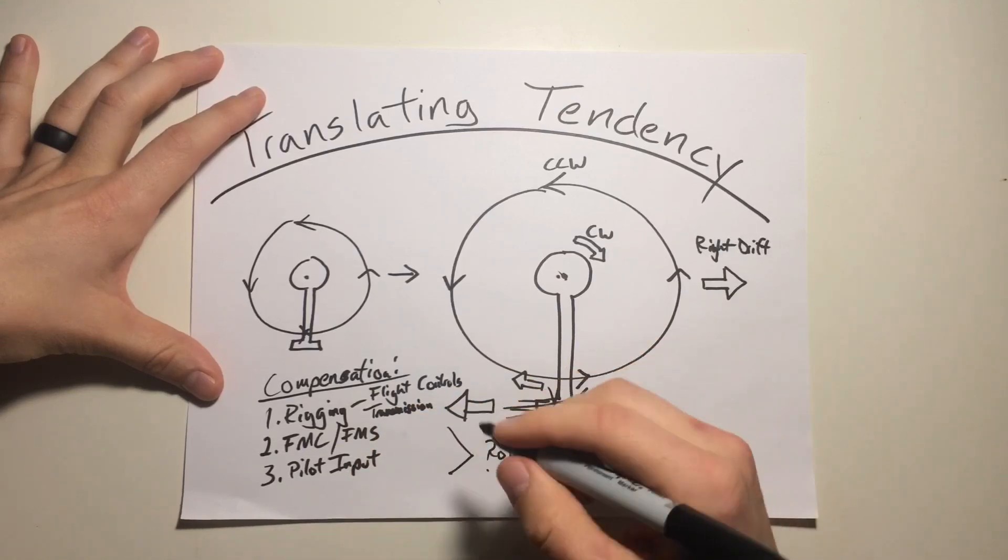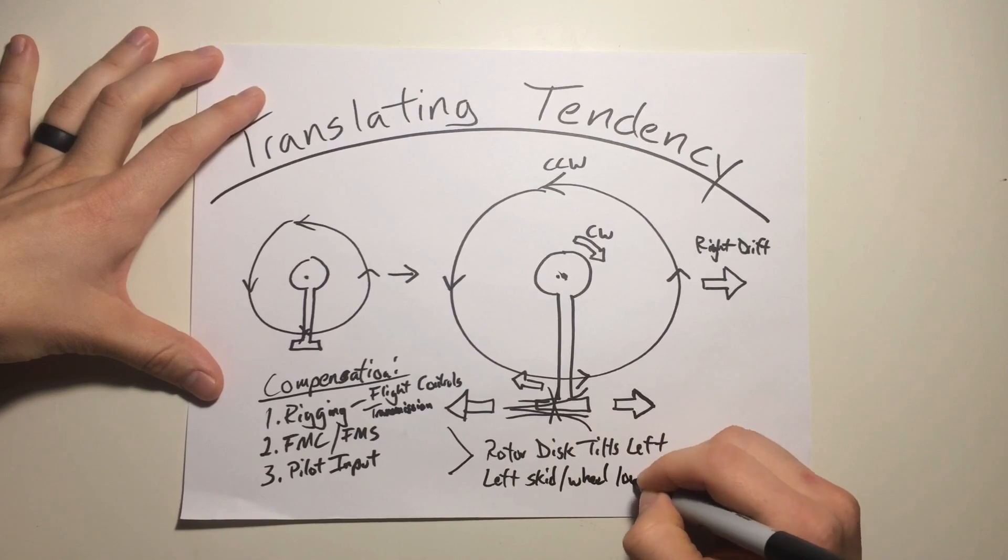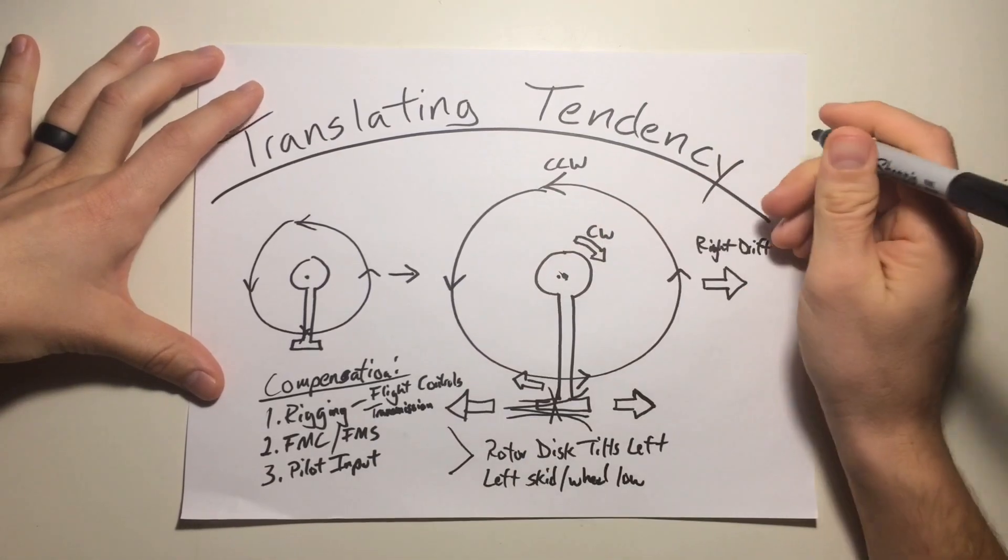With that disc tilted to the left, it's going to result in a left skid slash left wheel low at a hover, when you're compensating for that translating tendency.